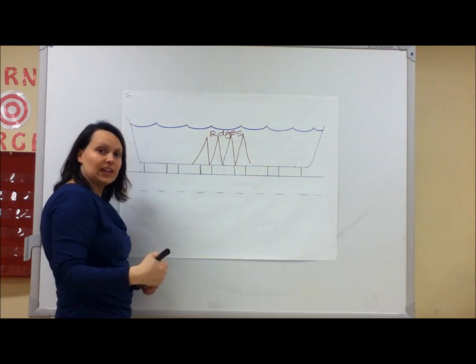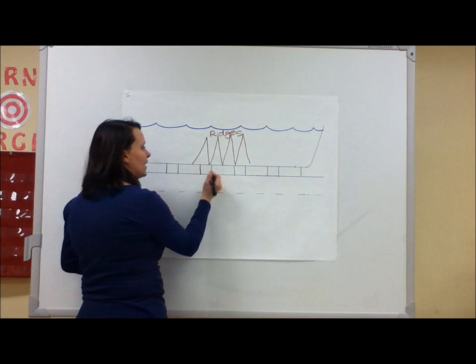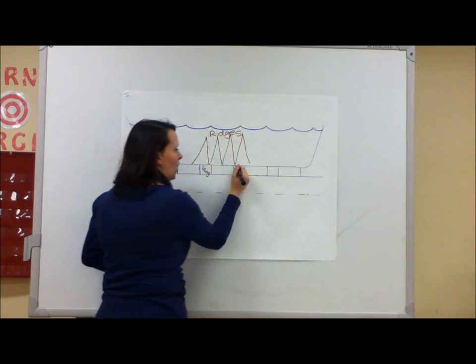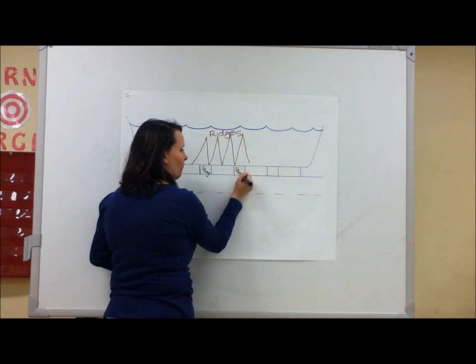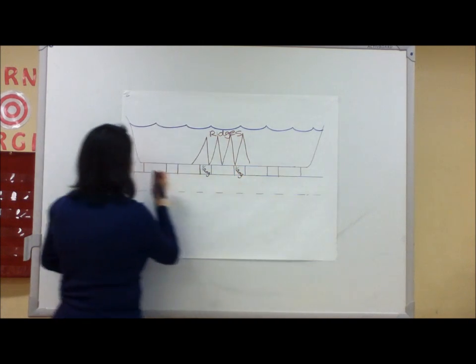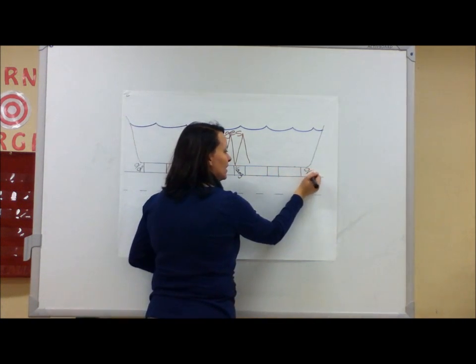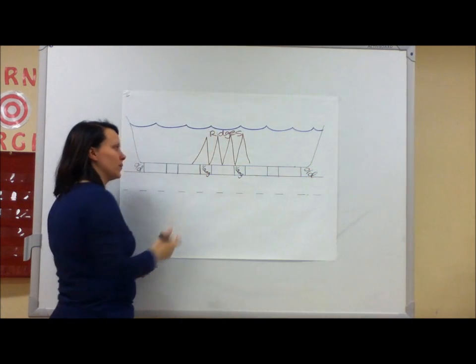So scientists drilled down holes. And what they realized was here was the youngest rock, while out here was the oldest rock. So the oldest rock was near the continents, and the youngest rock was near the ridges.